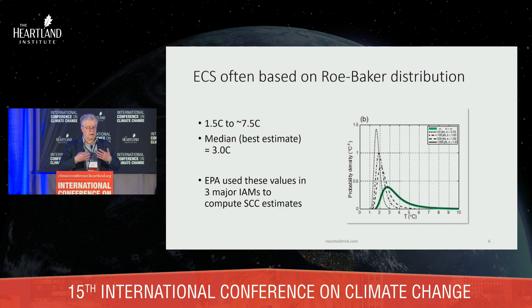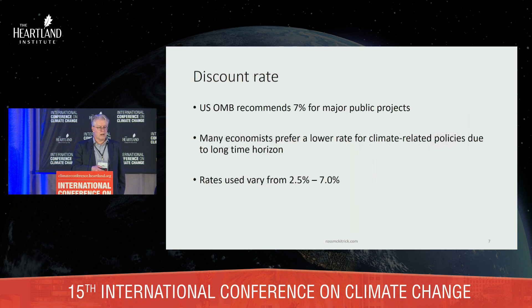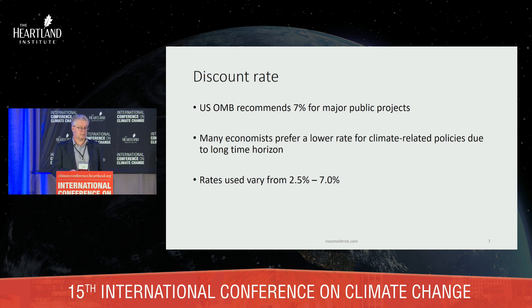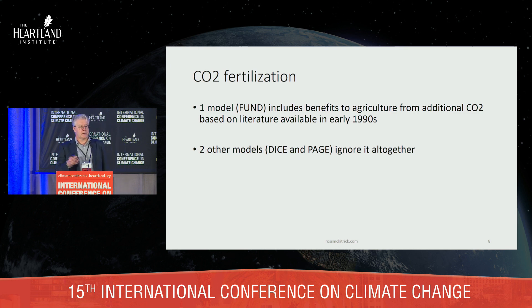When the EPA runs these integrated assessment models, they run it thousands of times drawing samples from the Roe-Baker distribution to get a distribution of social cost of carbon estimates. They did that with three major integrated assessment models: DICE, Fund, and PAGE. As for the discount rate, the Office of Management and Budget recommends a 7% discount rate for public projects. In climate economics, people typically vary the rate from 2.5% to 7%. The Fund model includes benefits to agriculture from extra CO2 in the air; the other two ignore the effect altogether.